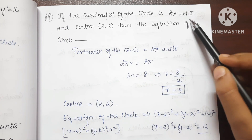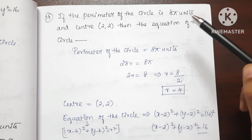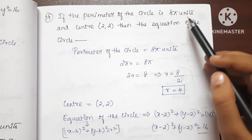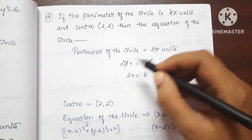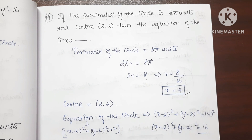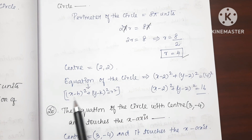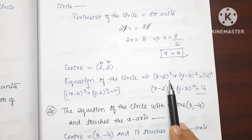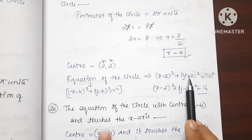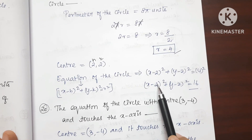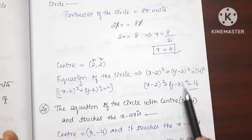Question 19: If the perimeter of a circle is 8π units and the center is (2,2), find the equation of the circle. Perimeter = 2πr = 8π, so r=4. Using the formula (x-h)²+(y-k)²=r² with h=2, k=2, r=4: the equation is (x-2)²+(y-2)²=16.